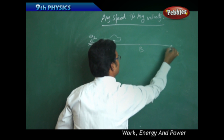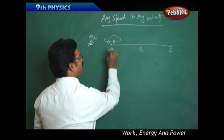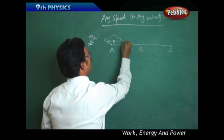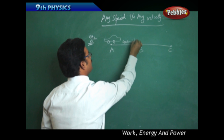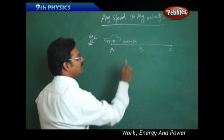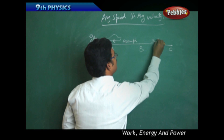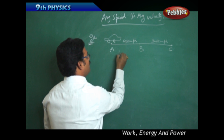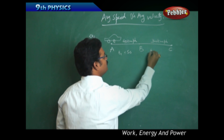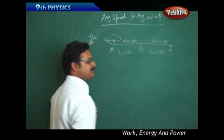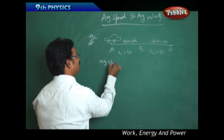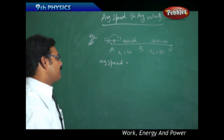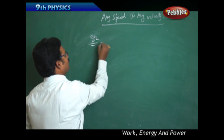Second example: the same car moves from point A to B, then B to C. From A to B, the car has a speed of 40 kmph. From B to C, the speed is 30 kmph. The time taken from A to B is t1 equal to 5 seconds, and from B to C the time taken t2 equals 3 seconds. What is the average speed?